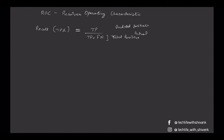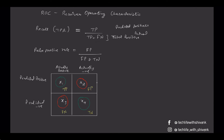We also have something called False Positive Rate. False Positive Rate is out of all the negatives, how many false positives we have. So it's False Positive upon False Positive plus True Negatives. Looking at the confusion matrix, True Positive Rate is x1 upon x1 plus x3, and False Positive Rate is x2 upon x2 plus x4.